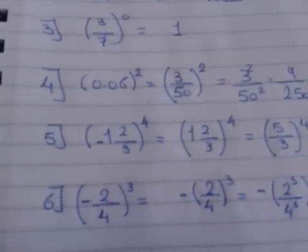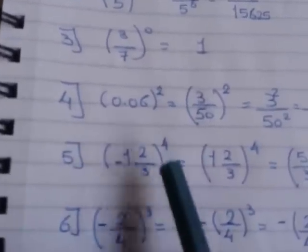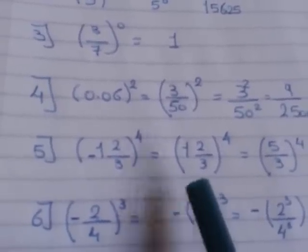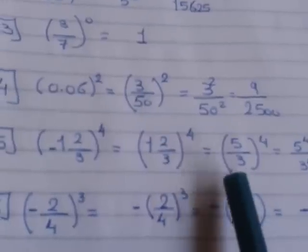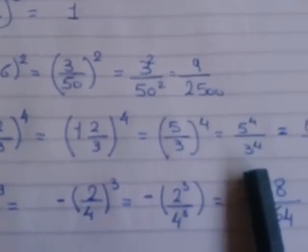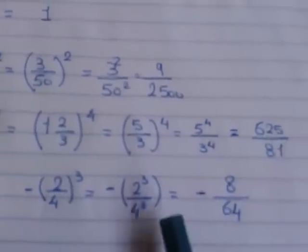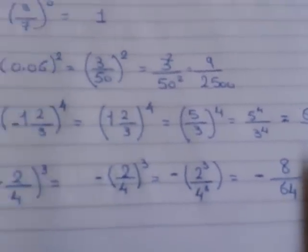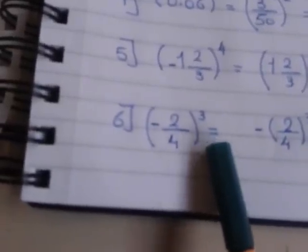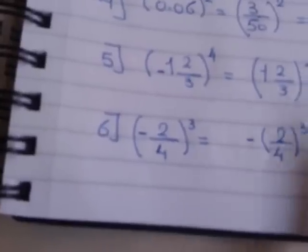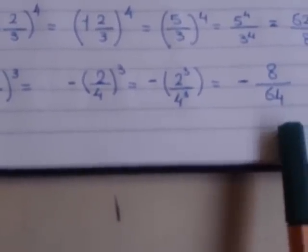Number 5: negative 1 and 2 over 3, all to the power 4. The even number eats the negative sign. I will change the mixed number to a rational number: it gives me 5 over 3. Then 5 power 4 over 3 power 4: 5 power 4 equals 625, and 3 power 4 equals 81. Number 6: negative 2 over 4, all to the power 3. I have an odd power, so it will send the negative sign out. 2 power 3 equals 8, and 4 power 3 equals 64, and the negative sign remains.